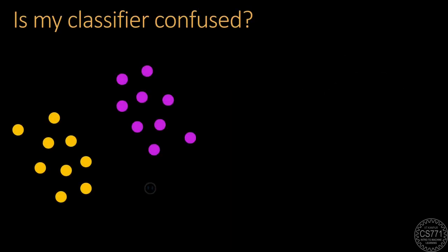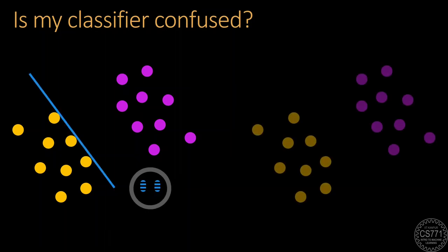Given this training data of yellow and purple points, Melbo learns a linear classifier. On the other hand, Melbo's cousin Melby learns this other linear classifier. Which classifier is better?